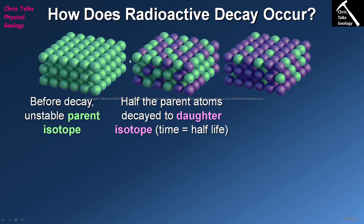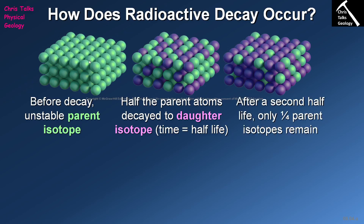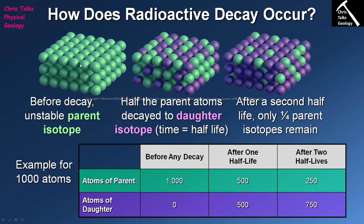Every time you take this step, the amount of time required for one half-life is constant — it does not change. In this diagram, let's say we have 1,000 atoms of a radioactive isotope — let's say uranium, which we know decays to lead, the daughter isotope. Initially we start off with 1,000 atoms of our parent isotope and zero atoms of our daughter isotope, because no decay has occurred yet.